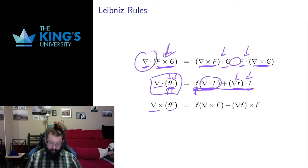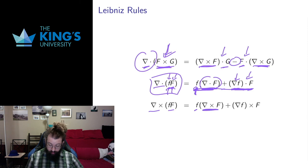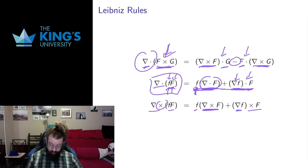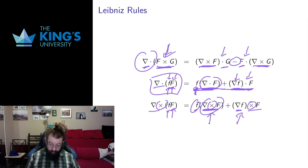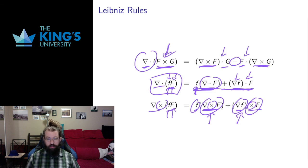For the curl of a scalar product, the Leibniz rule gives: the curl of f times F equals f times the curl of F, plus the gradient of f cross F. The products match their context: this is a cross product, as is the original curl operation. The gradient is the appropriate derivative for the scalar field piece, while curl is the derivative for the vector field piece. The structure is always: one function times the derivative of the other, with the right kind of derivative and product for each piece.